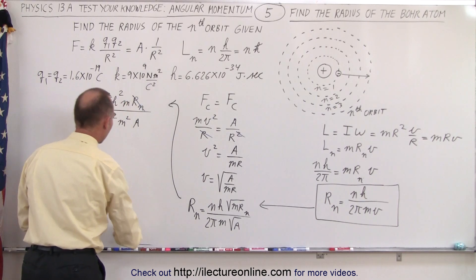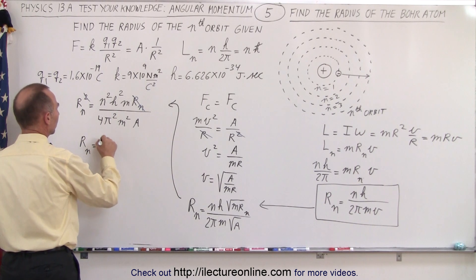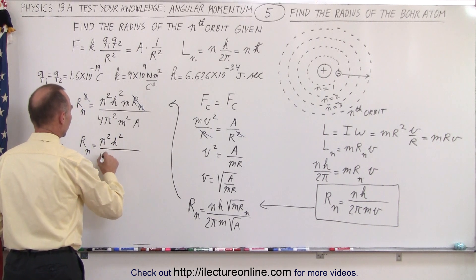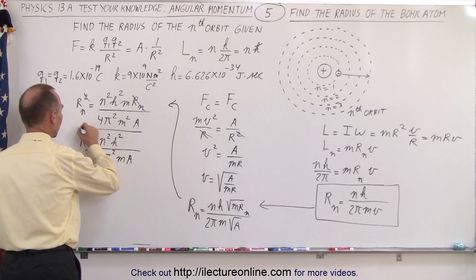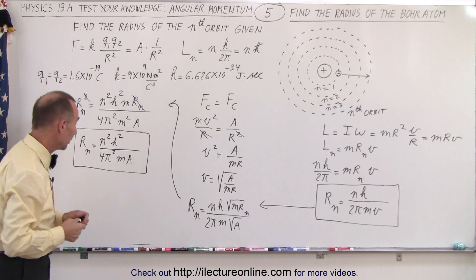So finally, I could then write that r sub n is equal to n squared h squared divided by 4π squared ma, and that would then be the radius that they found for the Bohr atom.